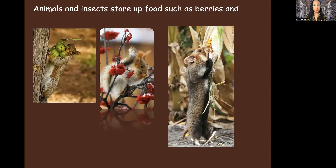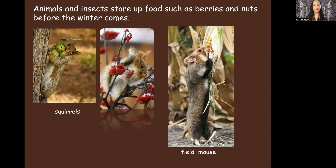Animals and insects store up food such as nuts and berries before the winter comes. So what kind of animals are these? We have squirrels storing up nuts, and in the picture in the middle, storing up berries. And the picture all the way to the right — it's a field mouse. We have mouse as singular and mice, M-I-C-E, as plural. So you wouldn't say field mouses — you would say field mice. Good job picking that up.